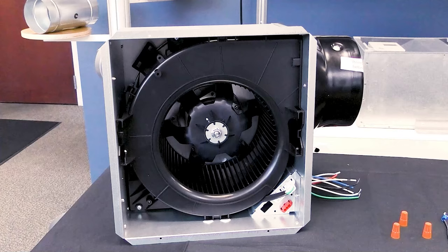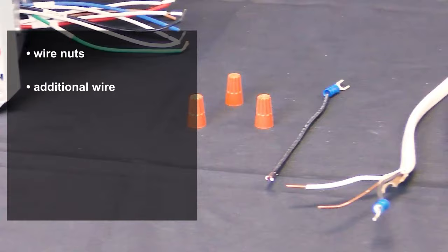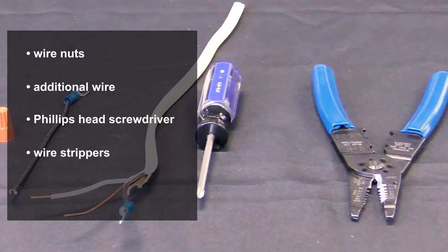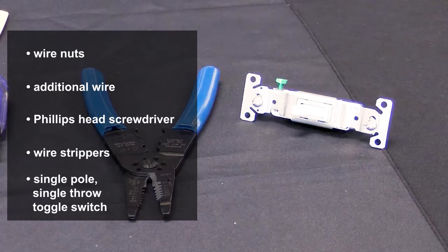First, gather your supplies including your premium choice fan, wire nuts, additional wire, a Phillips head screwdriver, wire strippers, and a single pull, single throw toggle switch.